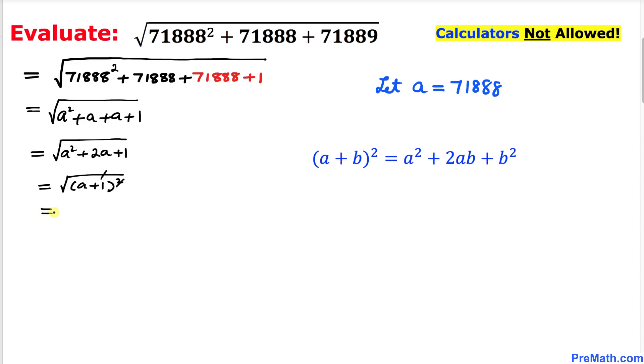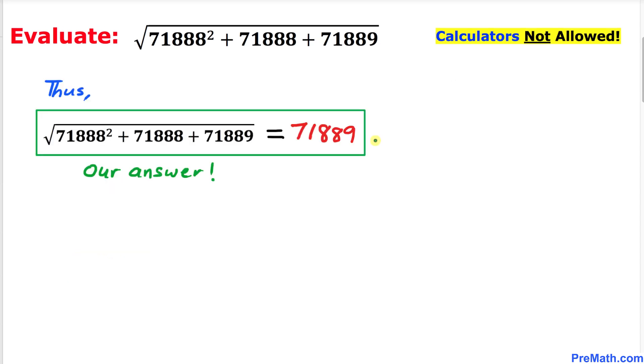So we get a plus 1. But we know our original value of a is 71888, so let me go ahead and replace that: 71888 plus 1, which gives us 71889. And that's our answer. Thus, our simplified answer turns out to be 71889.